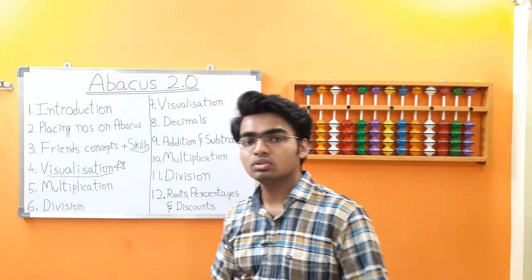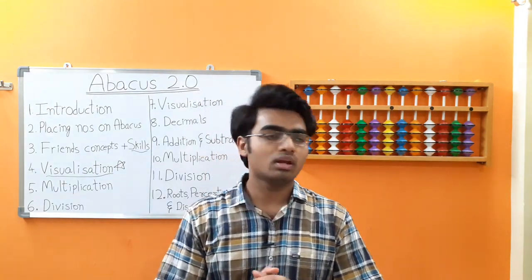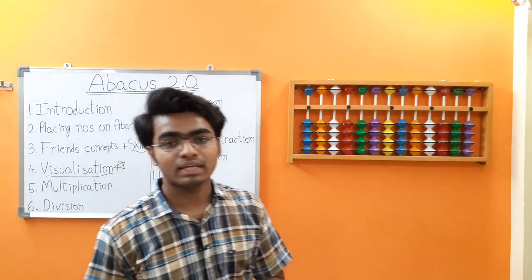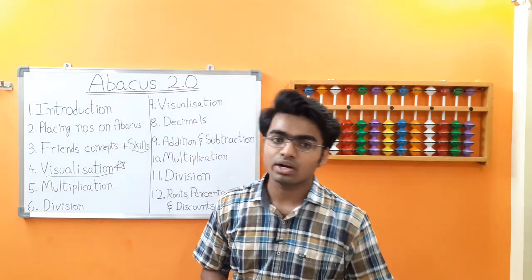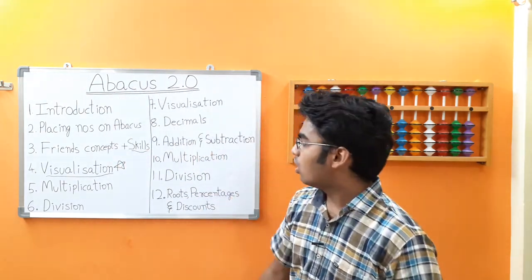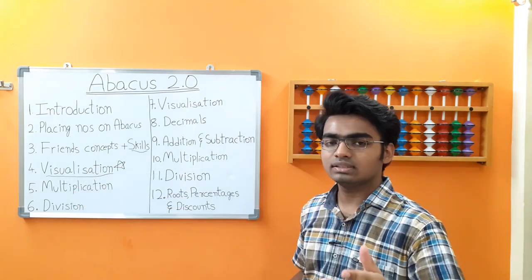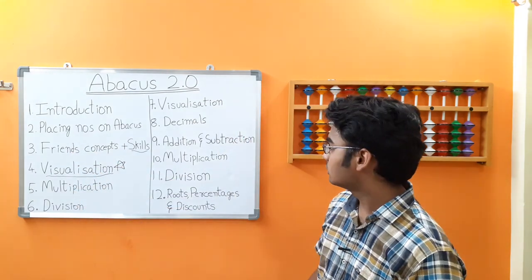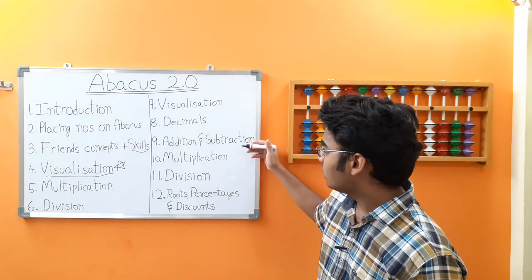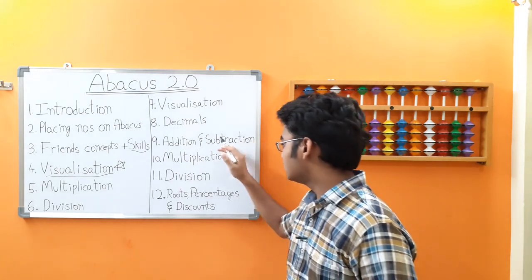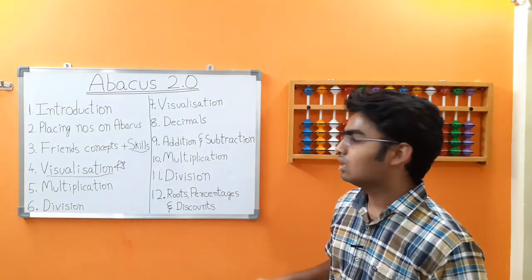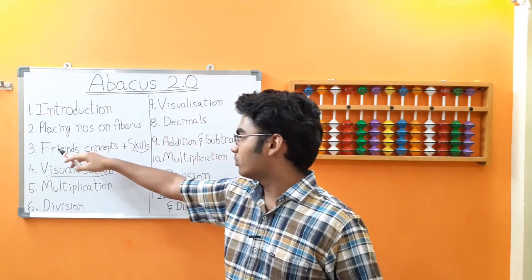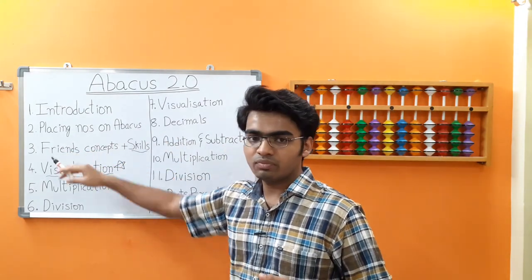We are also going to introduce decimals, where we'll explain how to place decimal numbers on the abacus and cover all the friends concepts — additions and subtractions — on decimal numbers. Don't be confused that these are duplicates of the friends concepts module; these involve more complex operations.